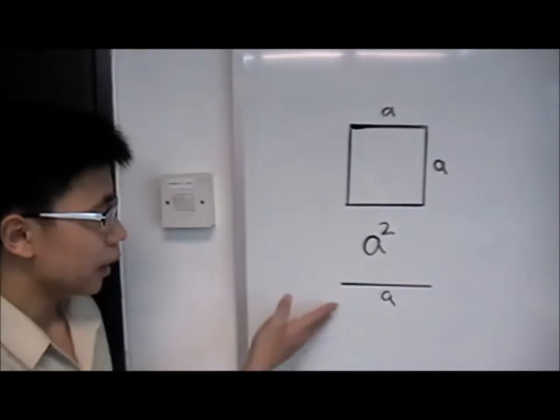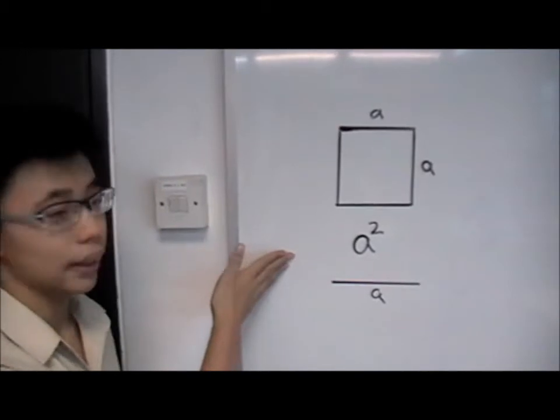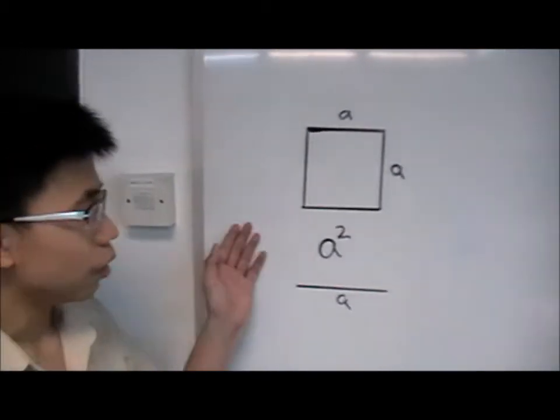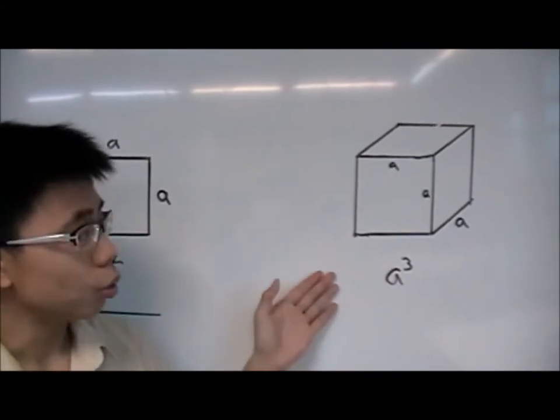Let us take this length as A. So with this length, you can have A and A, then you make an A square. Moving on, we will be adding an additional dimension, we will have an A cube.